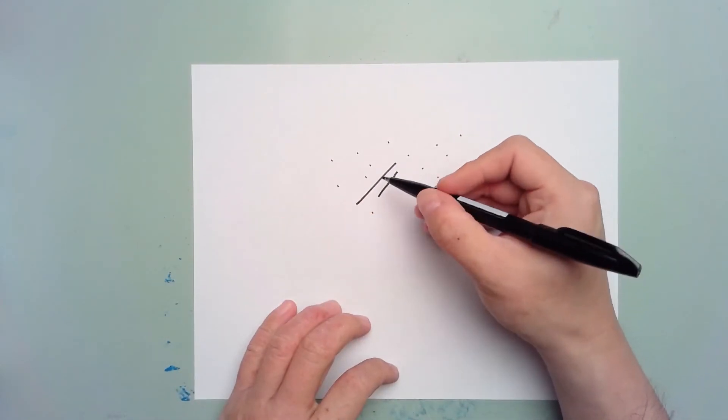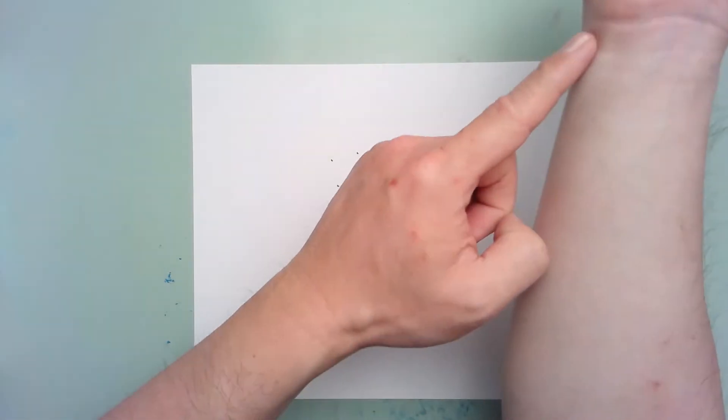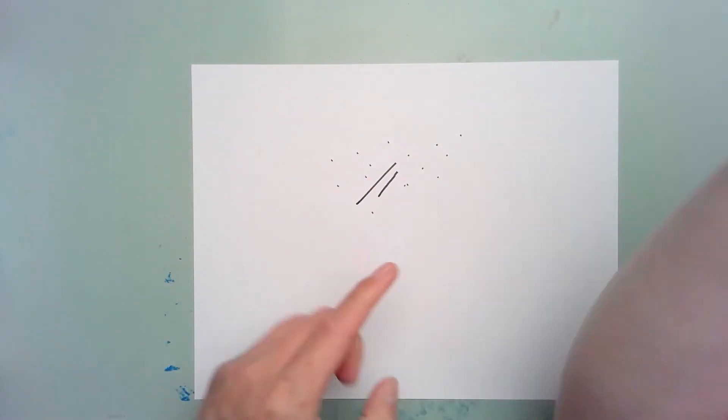In addition, the 45-degree pen grip allows the meaty part of your palm and your forearm and elbow to be supported by the drawing surface.